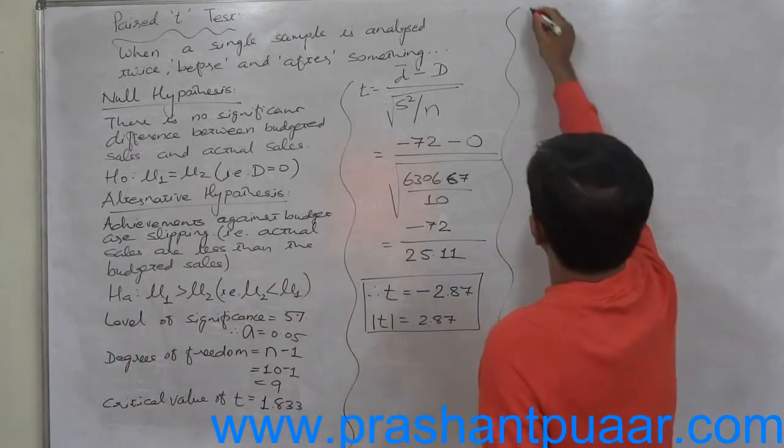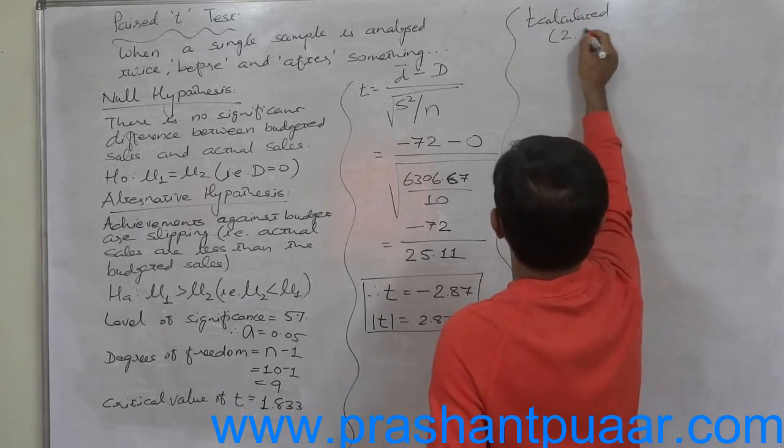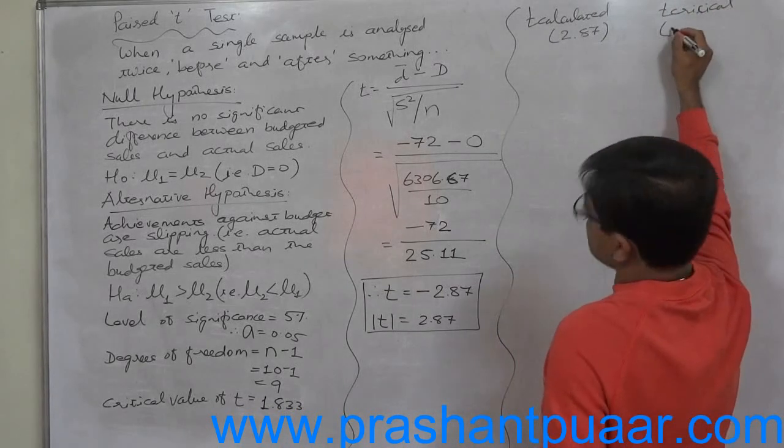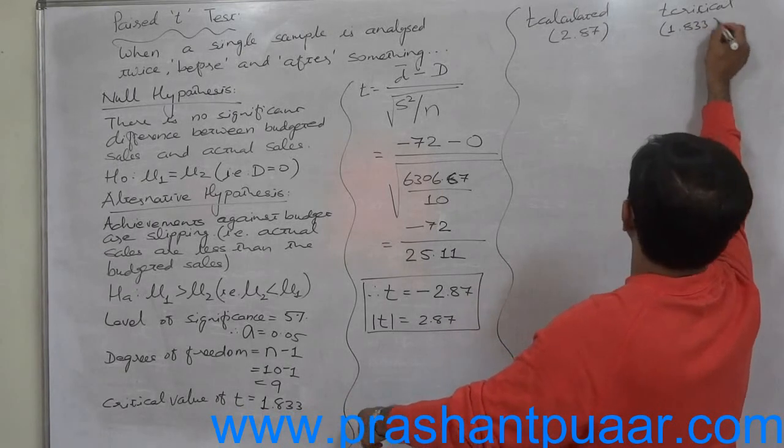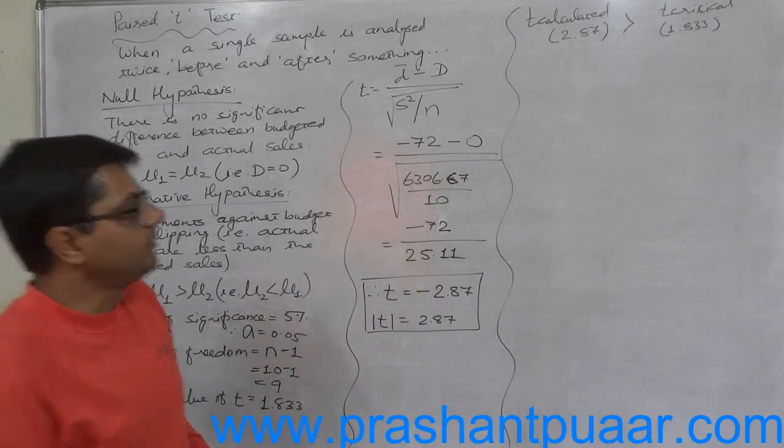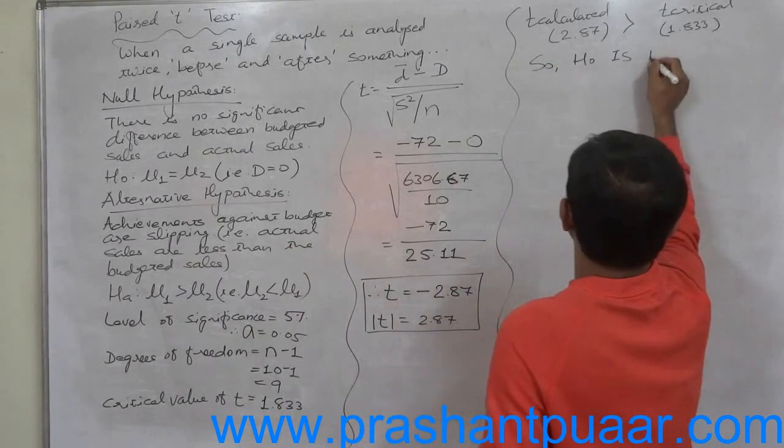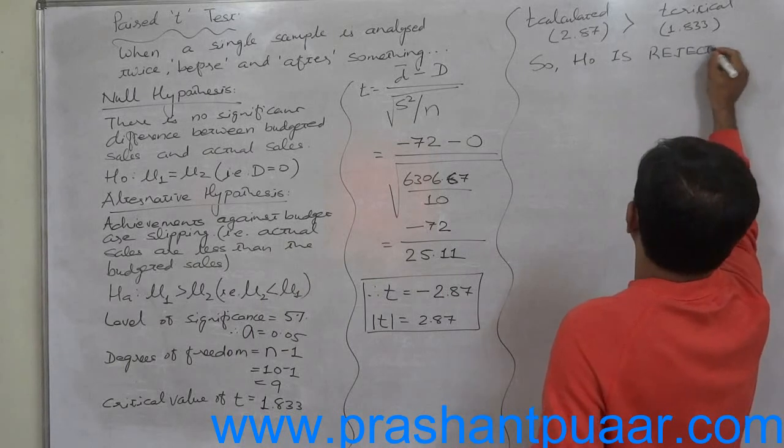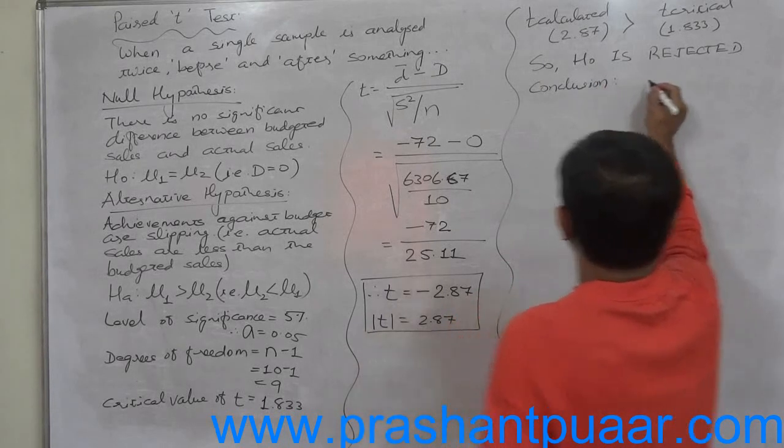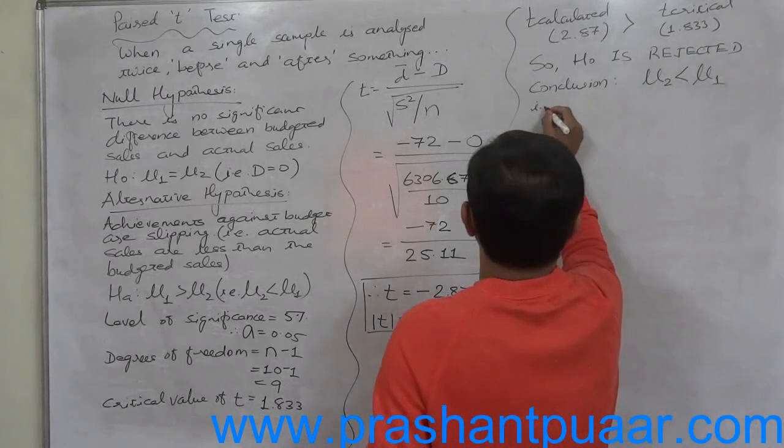Comparison: t calculated is 2.87, t critical is 1.833. The calculated value of t is greater than the critical value of t. Hence, null hypothesis is rejected. The conclusion is: actual sales are less than the budgeted sales.